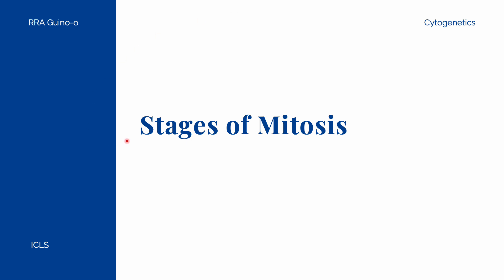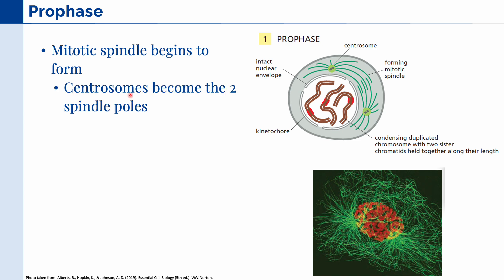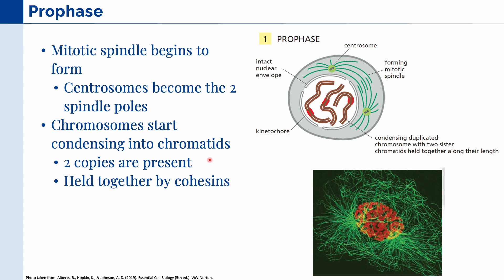Next, we'll talk about the different stages of mitosis, highlighting the important events that happen in each phase. First, let's talk about the prophase. The first thing that occurs is the formation of the mitotic spindle, composed of the two copies of our centrosome, which also become the two spindle poles. We can see a fluorescent micrograph of those two centrosomes. At the same time, the chromosomes start condensing into chromatids within the nucleus. Normally in the interphase these chromosomes are indistinguishable from one another, but in the prophase they become highly condensed and visible using a microscope. There are two copies present, and they are held together by proteins known as cohesins.